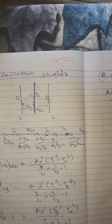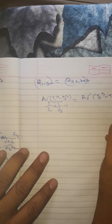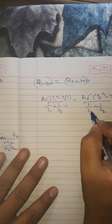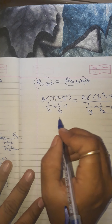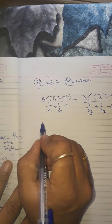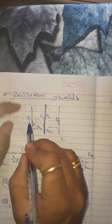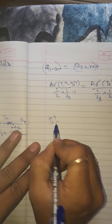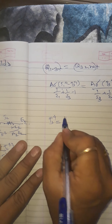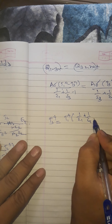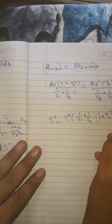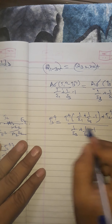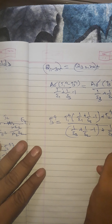That expression is divided by 1 upon epsilon 1 plus 1 upon epsilon 3 minus 1, which equals A sigma T3 raised to 4 minus T2 raised to 4, divided by 1 upon epsilon 3 plus 1 upon epsilon 2 minus 1. The A sigma terms cancel. We need to calculate T3 raised to 4, which equals: T3 raised to 4 multiplied by the bracket 1 upon epsilon 1 plus 1 upon epsilon 3 minus 1, divided by the bracket 1 upon epsilon 3 plus 1 upon epsilon 2 minus 1, plus 1 upon epsilon 1 plus 1 upon epsilon 3 minus 1.